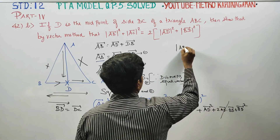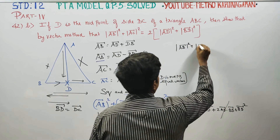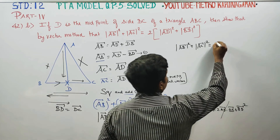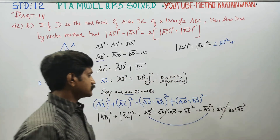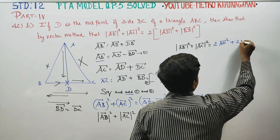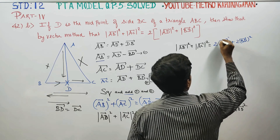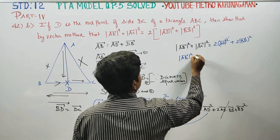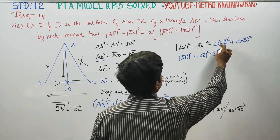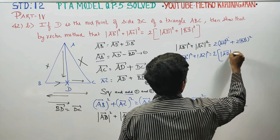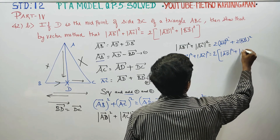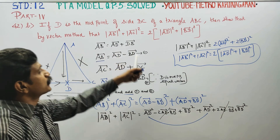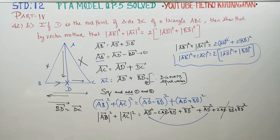Next stage: magnitude of AB vector whole square plus magnitude of AC vector whole square is equal to magnitude of AD vector whole square plus magnitude of BD vector whole square. We have proved this using vector methods. Thank you.